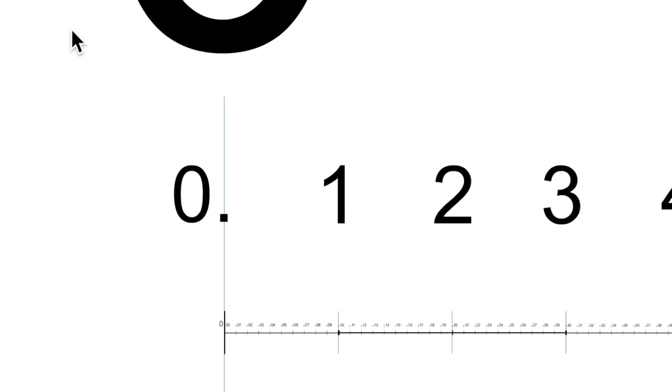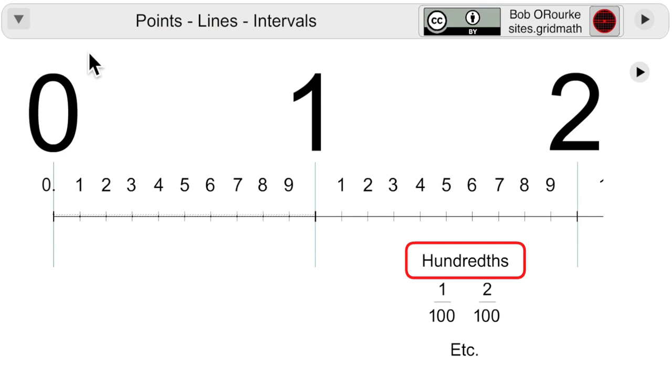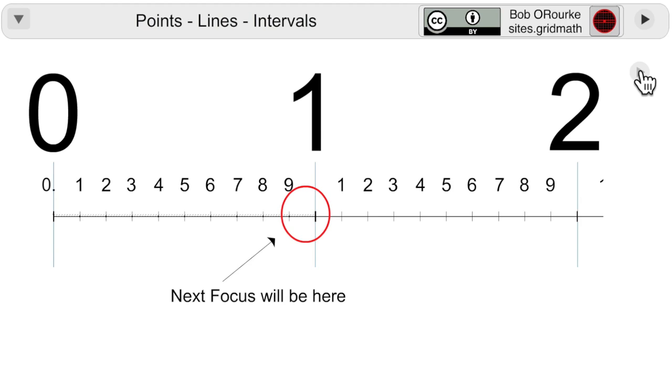What the change of scale looks like. The geometric visualizations are very limited in what they can actually show proportionally. And the final focus here is at 0.99 or 99 hundredths.